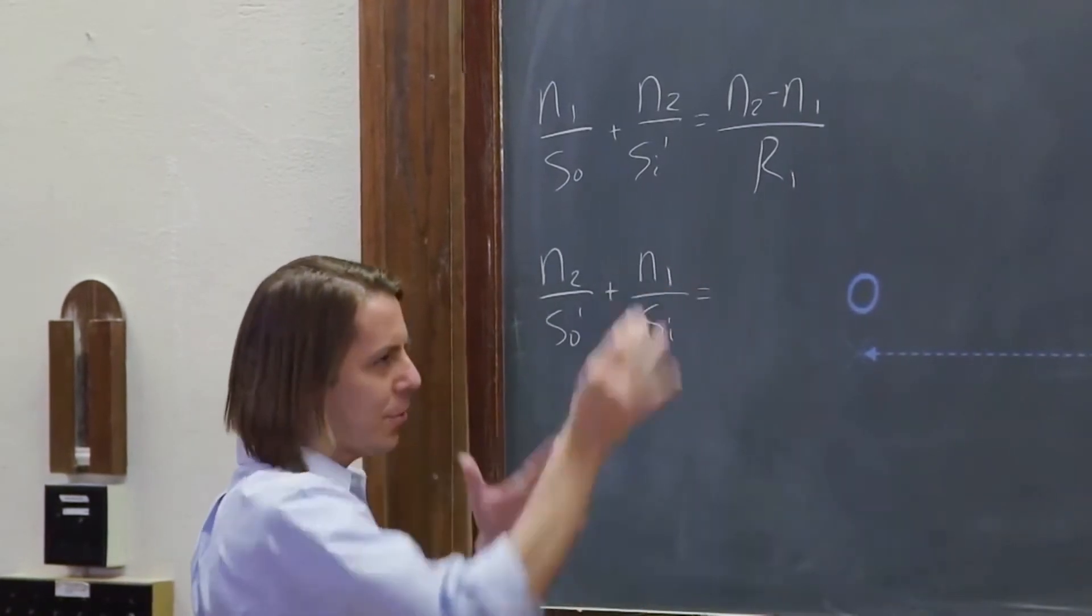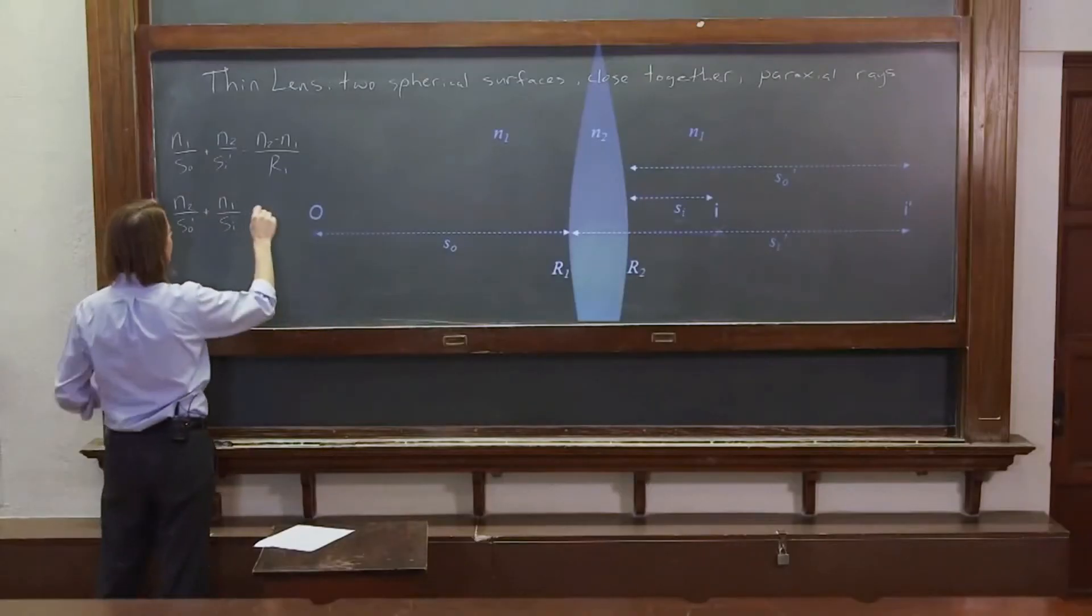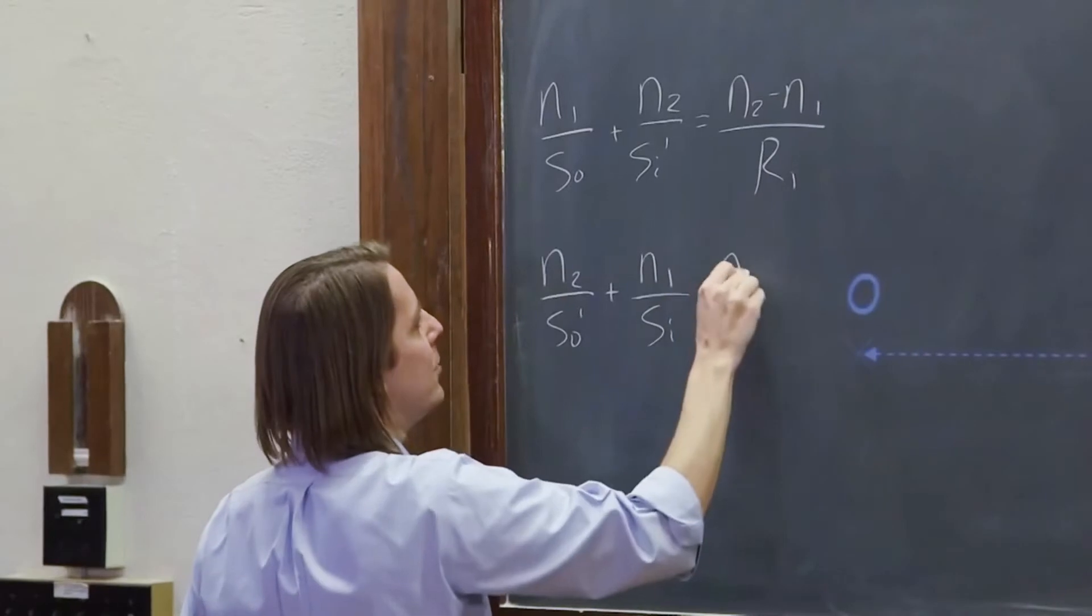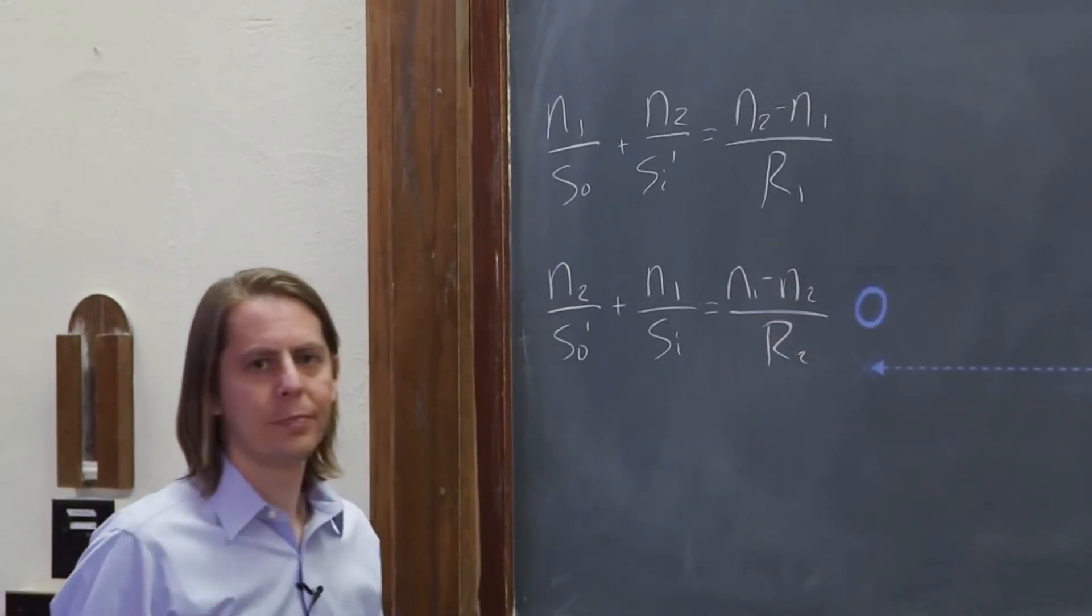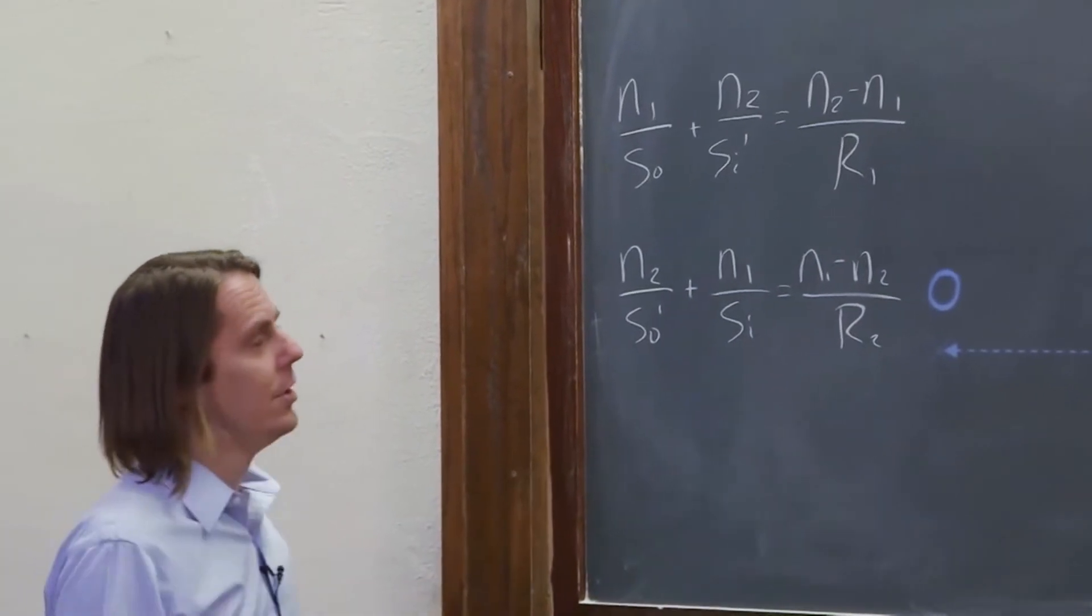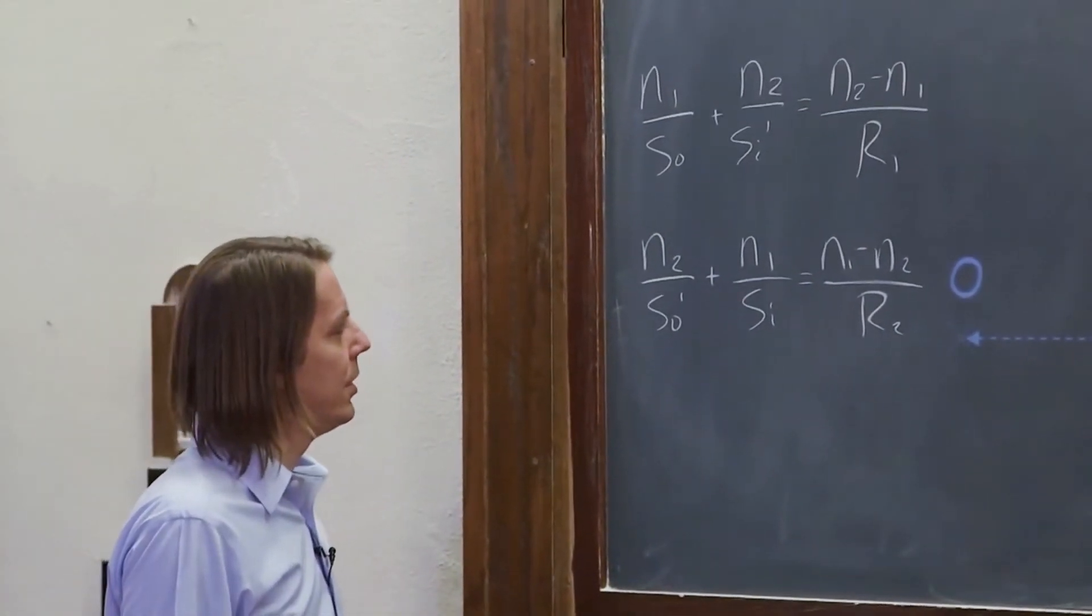It shows up there. And since the curvature is backwards and the radius and all this stuff, we put a negative sign on this basically. It's N1 minus N2 over R2. Because now we're thinking of an internal to external refraction.